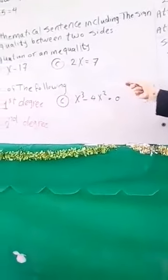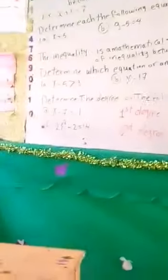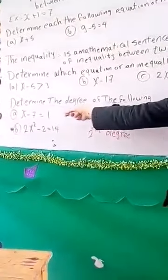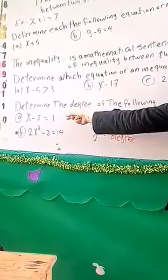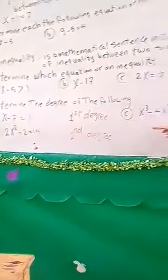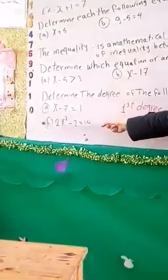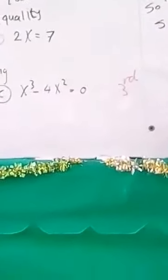In this case, x equals 7 is an equation. The second concept is degree — the degree is the power of x. If the power is 1, it is first degree. If the power is 2, it is second degree. If the power is 3, it is third degree. Okay?